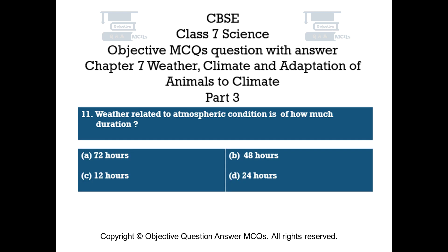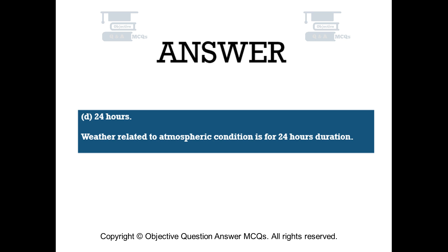Question number 11. Weather related to atmospheric condition is of how much duration? Option A: 72 hours. Option B: 48 hours. Option C: 12 hours. Option D: 24 hours. The right answer is Option D — 24 hours. Weather related to atmospheric condition is of 24 hours duration.